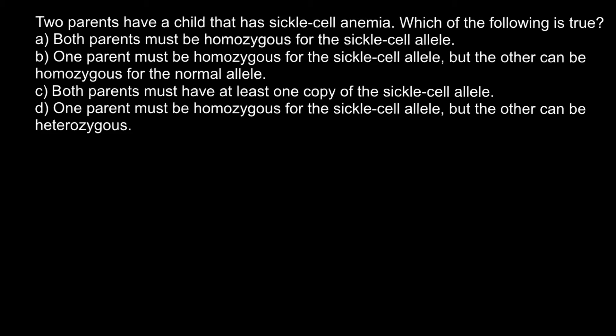I want to start by listing all the possible genotypes of the parents. One possible genotype is capital A and capital A — this would be a phenotypically normal person, because this genetic disorder is recessive. Another genotype can be capital A and small a, which is also a normal phenotype because one dominant allele is present. The last genotype would be small a, small a — homozygous recessive — and this is exactly the genotype when this genetic disorder is expressed, causing severe health problems.